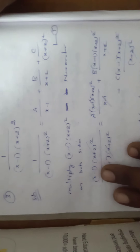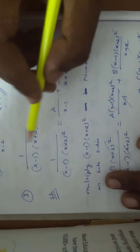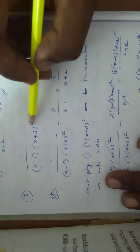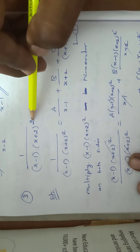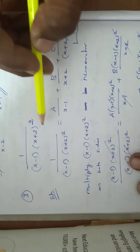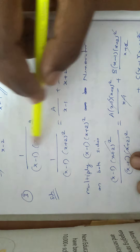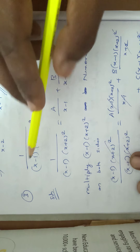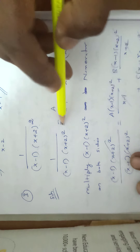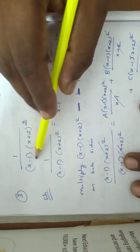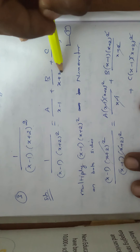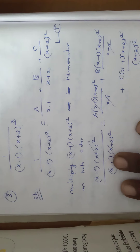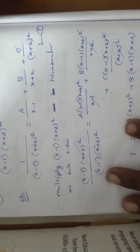Problem 3: Resolve 1/[(x - 1)(x + 2)²] into partial fractions. This is a repeated linear factor case. The decomposition is: A/(x - 1) + B/(x + 2) + C/(x + 2)² — equation number 1. Multiplying through by (x - 1)(x + 2)².